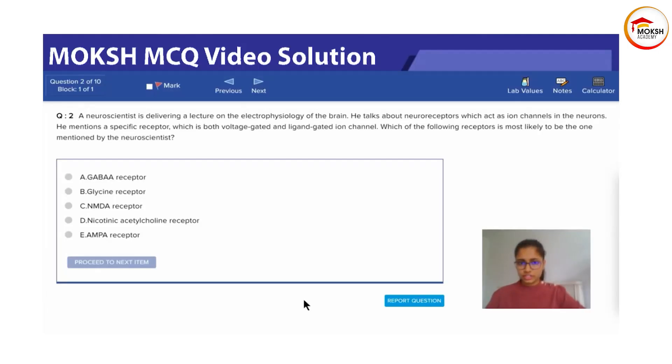A neuroscientist is delivering a lecture on the electrophysiology of the brain. He talks about neural receptors which act as ion channels in the neuron. He mentions a specific receptor which is both voltage-gated and ligand-gated ion channel. Which of the following receptor is most likely to be the one mentioned by the neuroscientist? GABA-A receptor, glycine receptor, NMDA, nicotinic acetylcholine, and AMPA.